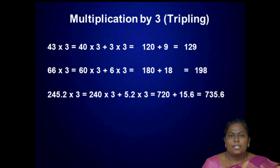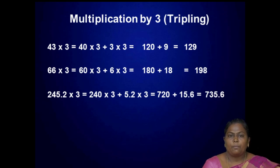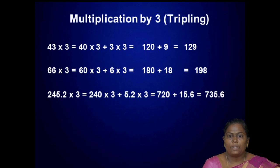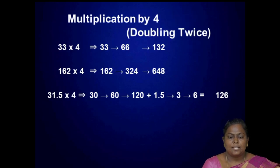For a decimal number, 245.2 into 3. How will you split 245.2? Split as 240 into 3 plus 5.2 into 3, so 720 plus 15.6, which is equal to 735.6.